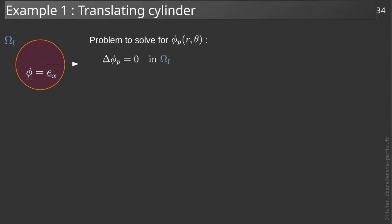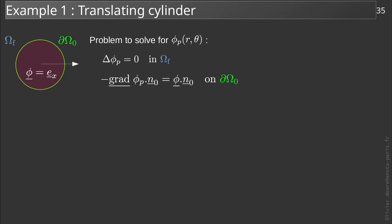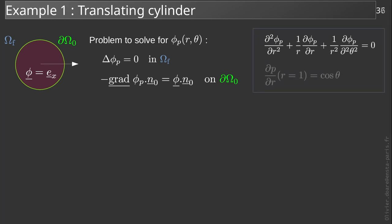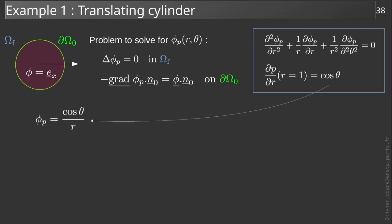The equations to solve are Laplacian of phi_p equals zero on omega_f0, with as boundary conditions the kinematic condition previously obtained. In polar coordinates, this Laplace equation is given as follows. And the boundary conditions become dp on dr in r equals 1 equals cos theta. The cos theta comes from the scalar product between e_x and the normal, which is e_r. Looking for a solution of the Laplace equation which satisfies the boundary conditions, and which does not tend to infinity when r tends to infinity, we find for phi_p cosine theta on r.